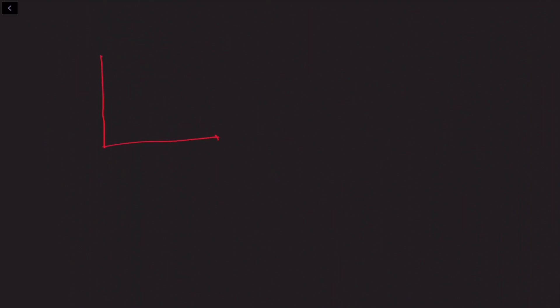Now that we know how to establish a dictionary between two observers who are at rest with respect to each other, let's ask a different question. Let's take two observers, but let's suppose that the first observer is here, and they have coordinate system x, y, and clocks of time interval t.